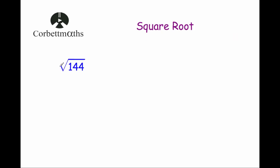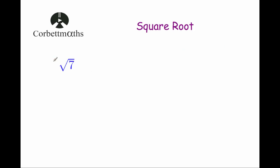Let's have a look at another example. Our next question says find the square root of 144. Well if you know your 12 times tables, you should know that 12 times 12 is equal to 144, so when multiplied by itself 12 will give 144, so the square root of 144 is 12.